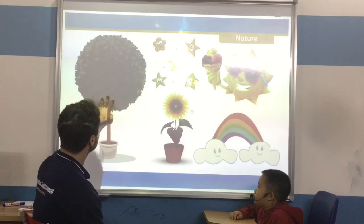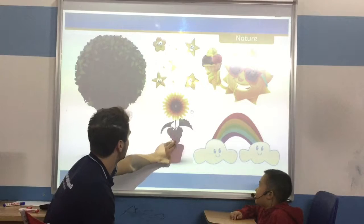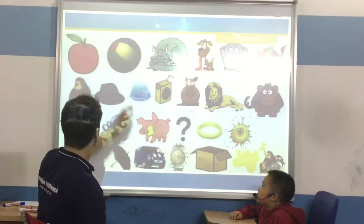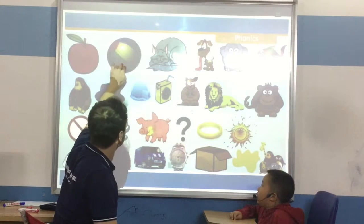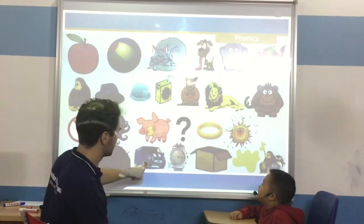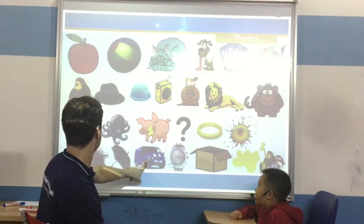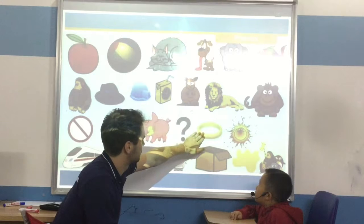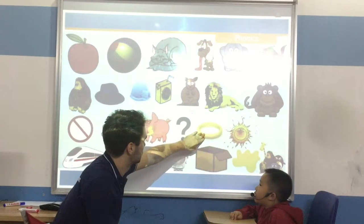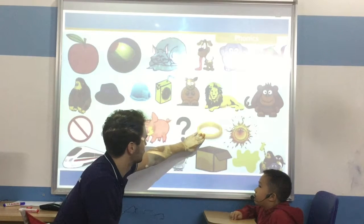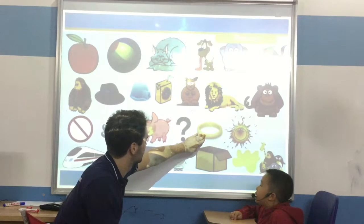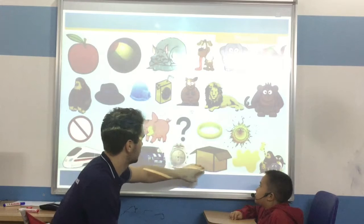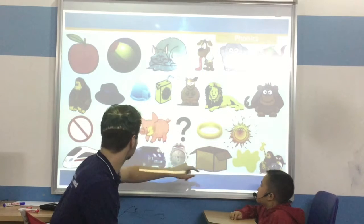What's this? It's a tree. Good. It's a flower. It's a rainbow. Well done. Apple. Balloon. Cats. Vine. Ring. Watch. Box. Well done.